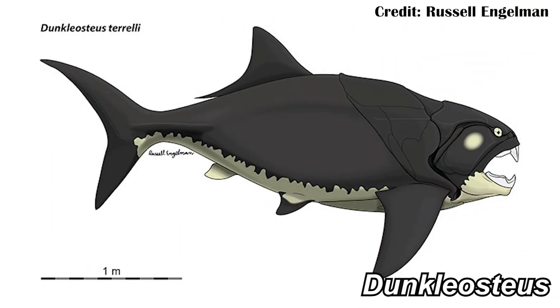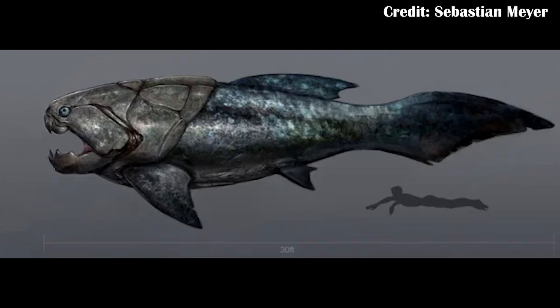Dunkleosteus has been widely considered one of the most interesting animals in the fossil record, at least for a lot of people with some passing familiarity with it. That's because it was largely reconstructed as this 30-foot-long behemoth of a fish — the first apex predator anywhere in the world that was swimming out in the oceans and eating whatever it wanted.